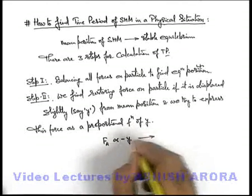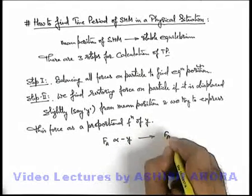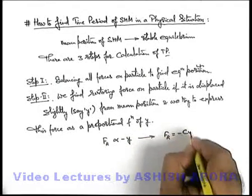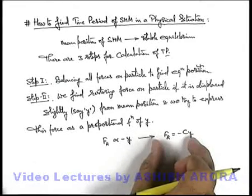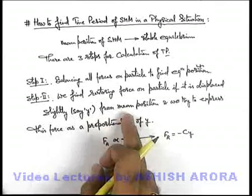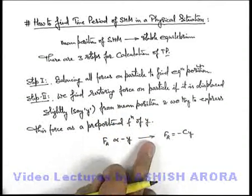You can also transform it into an equality, and that can be written as F equals minus cy, where c is the proportionality constant. This is a relation which is developed after displacing the particle and finding the restoring force on it. We'll have some examples to understand it in detail.